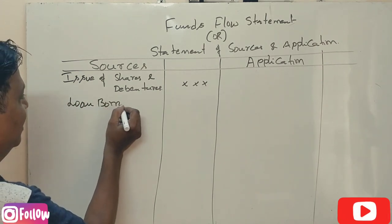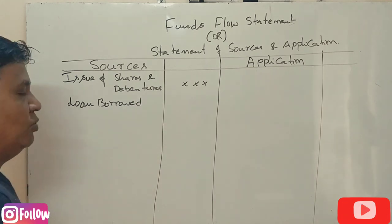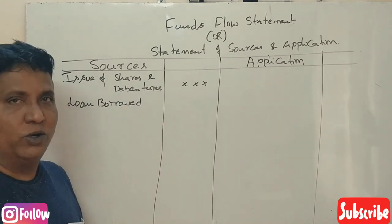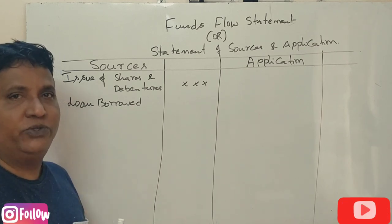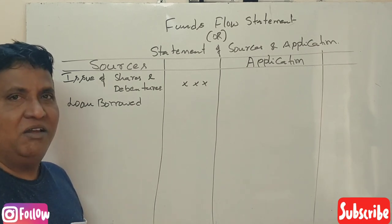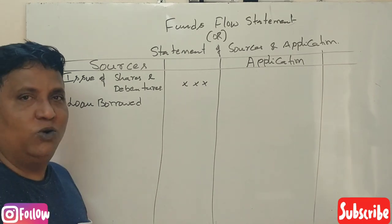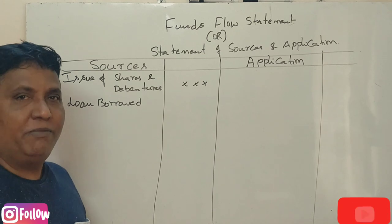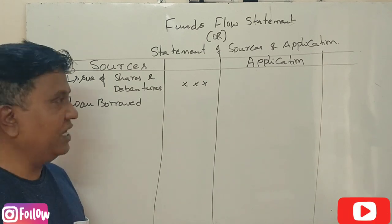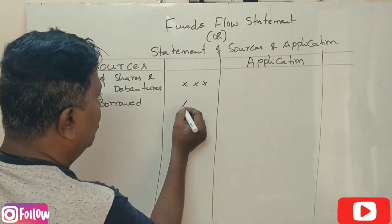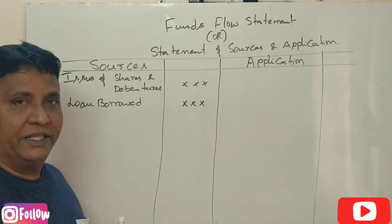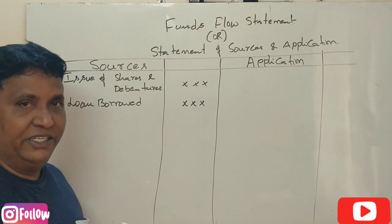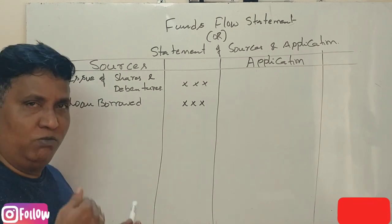The next source of funds is loans. Loans are borrowed from financial institutions, banks, and other companies. This loan borrowed from external sources is another important source of funds.